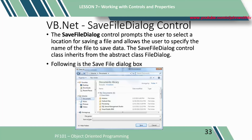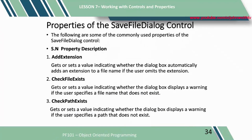Visual Basic.Net Save File Dialog Control. The save file dialog control prompts the user to select a location for saving a file and allows the user to specify the name of the file to save data. The save file dialog control class inherits from the abstract class file dialog.